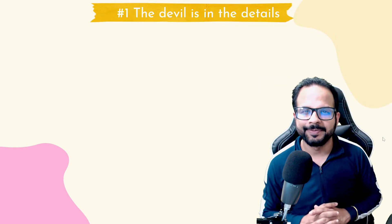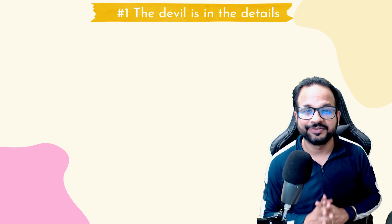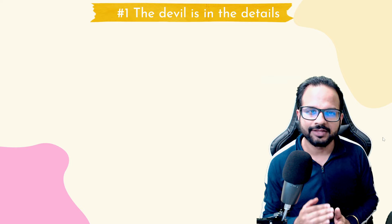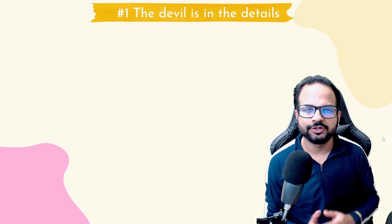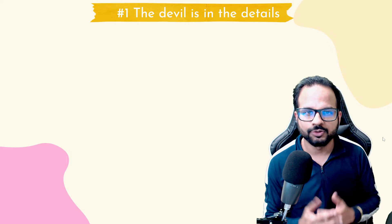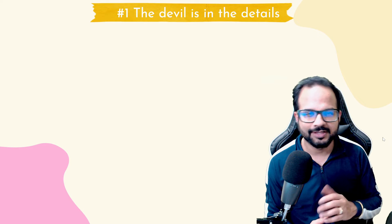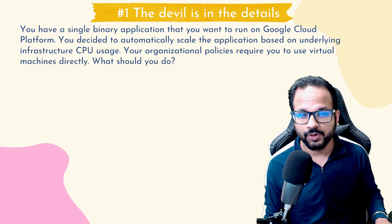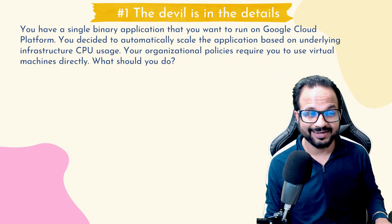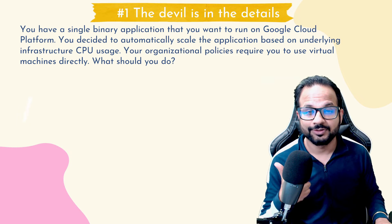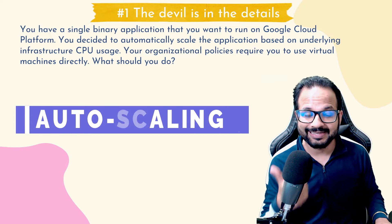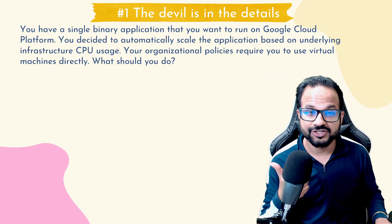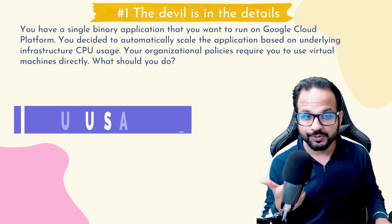The first tip is: the devil is in the detail. What I mean by that is read the question very carefully and note down all the keywords and the requirements given in the question — your solution will be based on those requirements. For example, suppose you have a single binary application that you want to run on Google Cloud and you decide to automatically scale the application. The first keyword for you would be 'automatically scale'.